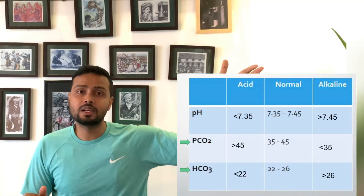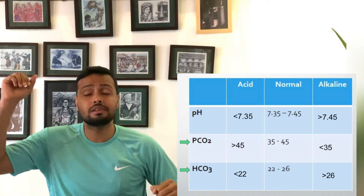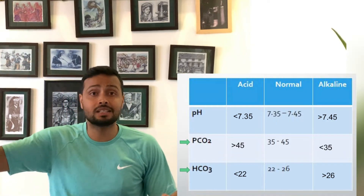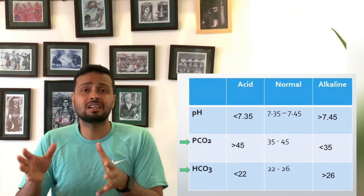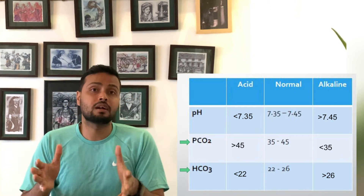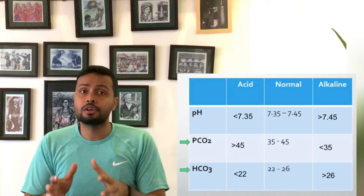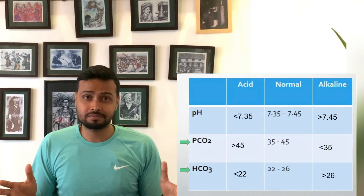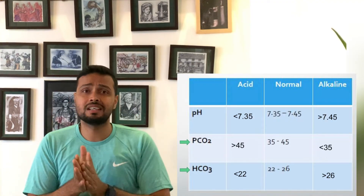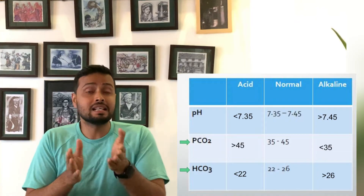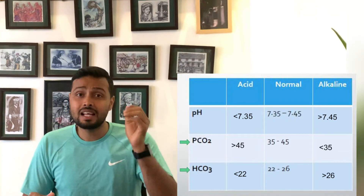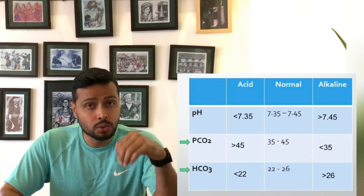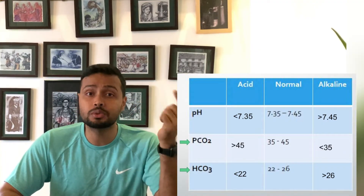Anything below 35 for PaCO2 is considered alkalosis, and anything above 45 is considered acidosis. The third component in ABG analysis is HCO3 (bicarbonate), which is the metabolic component.